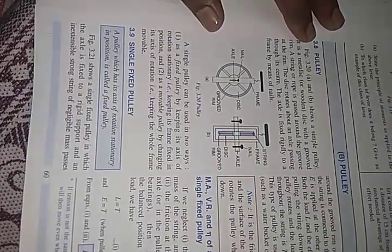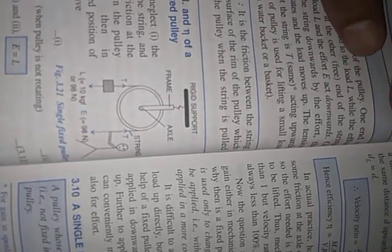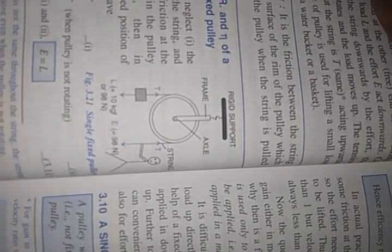As we discussed in the machines section, there is mechanical advantage (MA), velocity ratio (VR), and efficiency. Since a pulley is also a machine, it also has MA, VR, and efficiency. Now we will discuss the MA and VR for the single fixed pulley. See the diagram — this is a single fixed pulley where a person is applying effort.